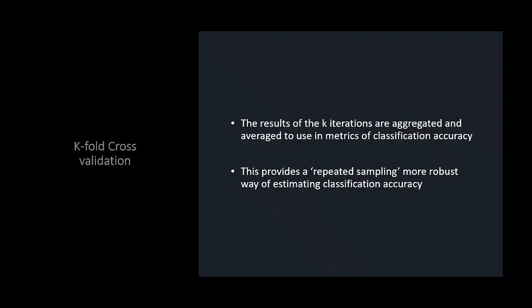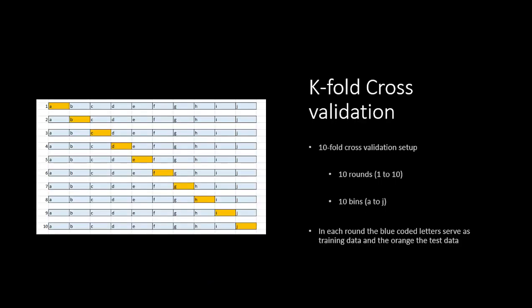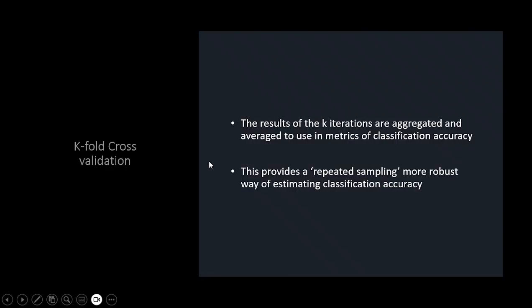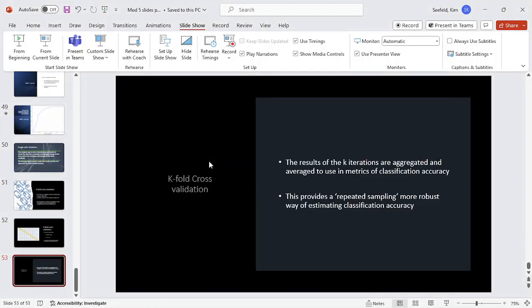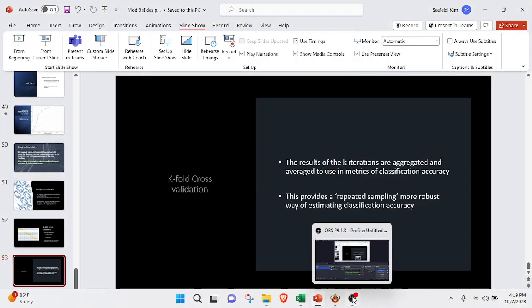The results from all 10 runs are aggregated and averaged, which gives you a much better accuracy picture. This is essentially a repeated sampling method that provides better estimates of classification accuracy. It also helps avoid the issue where a single train-test split might not be completely random — k-fold helps even that out. And that is the end of week six, with exercises to follow.